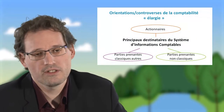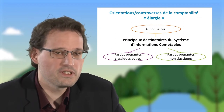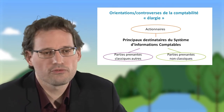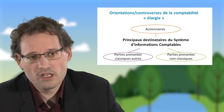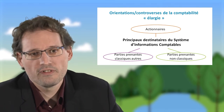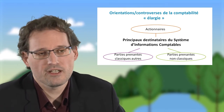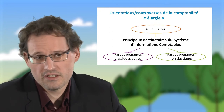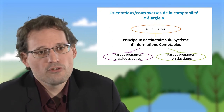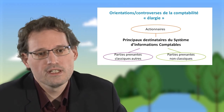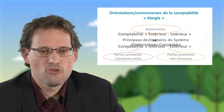Les systèmes d'information comptable élargie ne sont pas tous équivalents, ils ne sont pas orientés selon les mêmes directions. Certaines directions peuvent être complémentaires, d'autres peuvent être radicalement opposées et cela donne lieu à des controverses. Parmi ces grandes controverses, on peut signaler celle des destinataires principaux : est-ce qu'on reste sur les actionnaires ? Est-ce qu'on élargit à des parties prenantes classiques comme les fournisseurs ou les syndicats, ou des parties prenantes non classiques comme les ONG ?